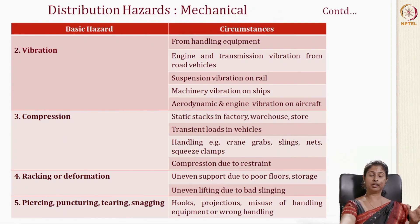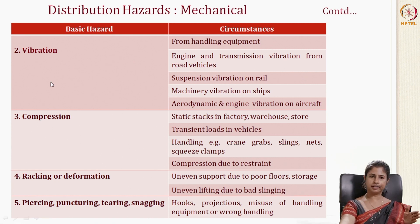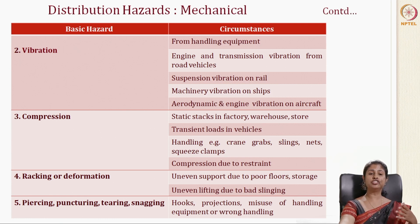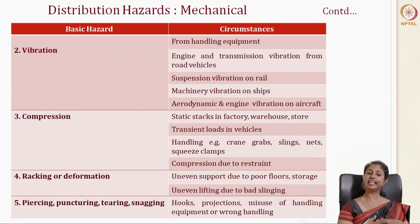Another mechanical hazard is vibration, which directly affects the package and in turn the secondary, primary package, and finally the product. Vibration can come from handling equipment, engine transmission, road transmission on road vehicles, suspension vibration on rail, mechanical vibration on ships, or aerodynamic and engine vibration on aircraft.